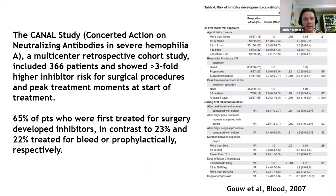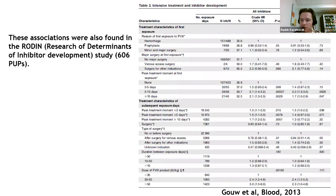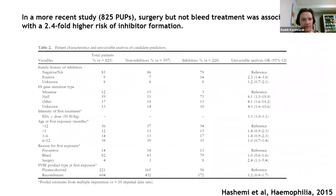The CANAL study — Concerted Action on Neutralizing Antibodies — a multi-center cohort including 366 patients, showed over three-fold higher inhibitor risk for surgical procedures, and peak treatment moments also increased the risk at the start of treatment. Overall, 65% of patients first treated for surgery developed inhibitors, in contrast to 23% and 22% treated for bleeds or prophylactically. A more recent large study including 625 patients found surgery, but not bleed treatment, was associated with a 2.4-fold higher risk of inhibitor formation.